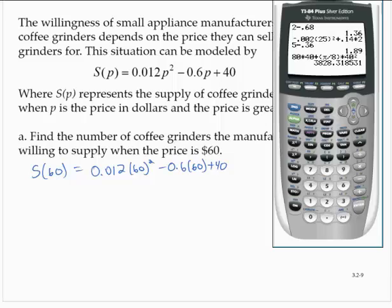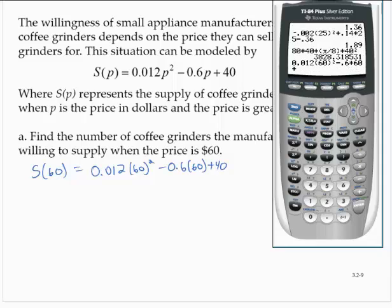Let's calculate that. Minus 0.6 times 60 plus 40 equals 47.2.